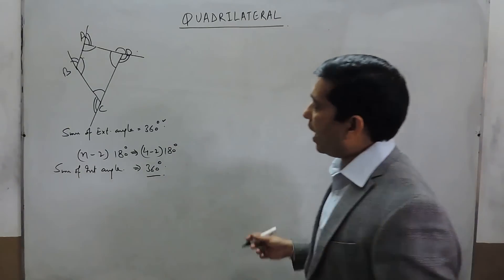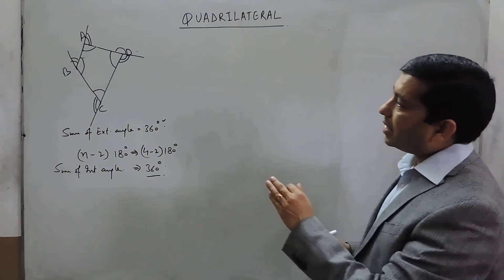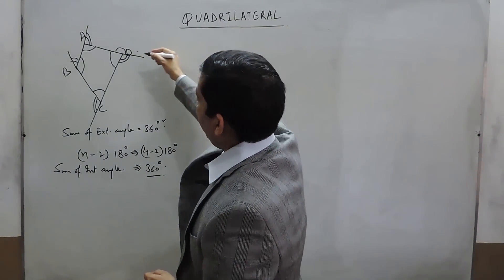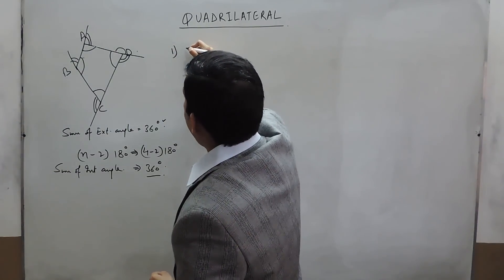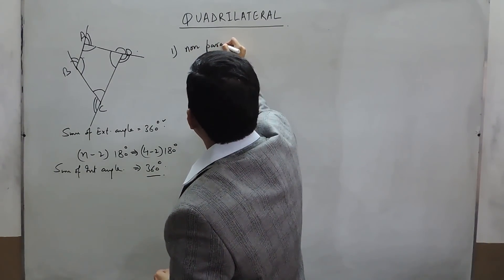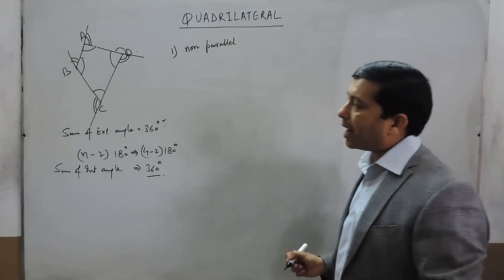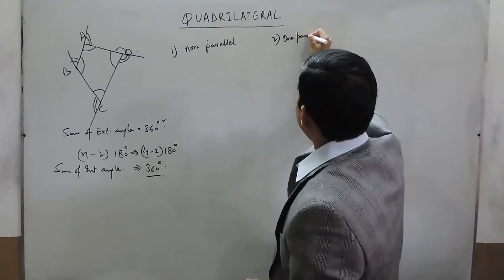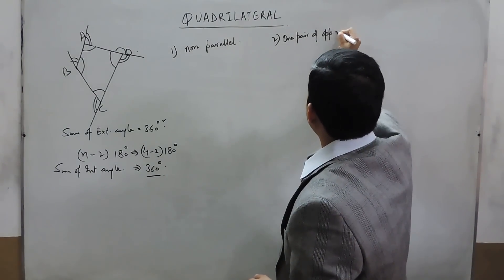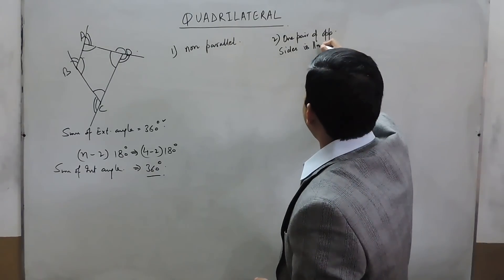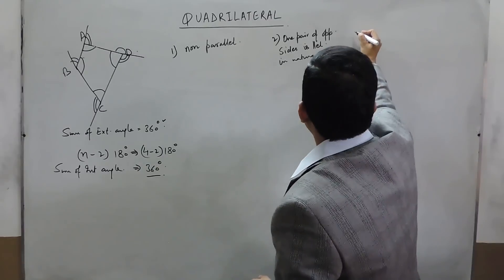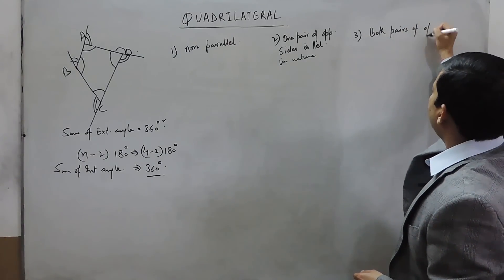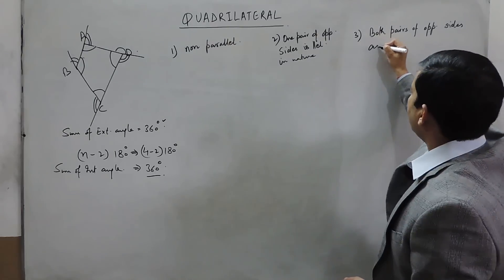Quadrilaterals can be classified in many ways, but the basic classification is on the basis of their sides. There are four sides, and the first case is that all four sides are non-parallel — no two sides are parallel to each other. The second classification is that one pair of opposite sides is parallel. The third classification is that both pairs of opposite sides are parallel.